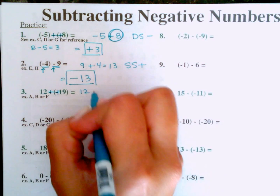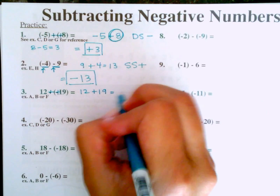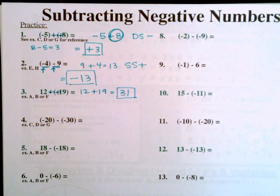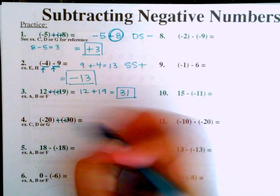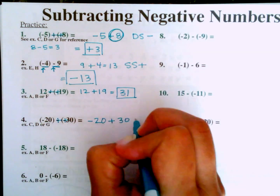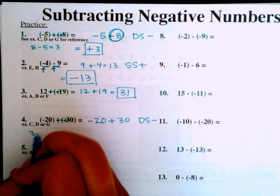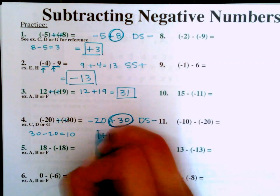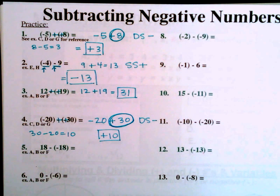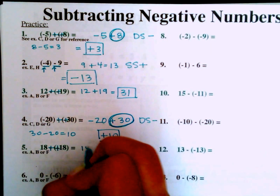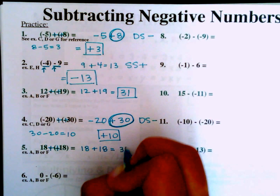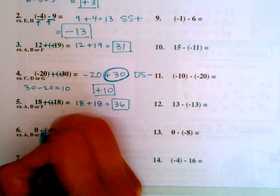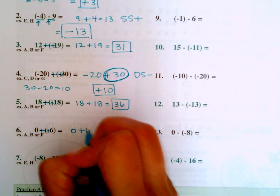Number three: twelve minus negative nineteen — this is really just twelve plus positive nineteen, which equals positive thirty-one, no more negatives involved. Number four: negative twenty minus negative thirty — minus negative becomes plus positive, so negative twenty plus thirty. Different signs, so subtract: thirty minus twenty equals ten. The larger number is positive, so the answer is positive ten. Number five: eighteen minus negative eighteen — minus negative becomes plus positive, so eighteen plus eighteen equals positive thirty-six. Number six: zero minus negative six — minus negative becomes plus positive, so zero plus six equals six.